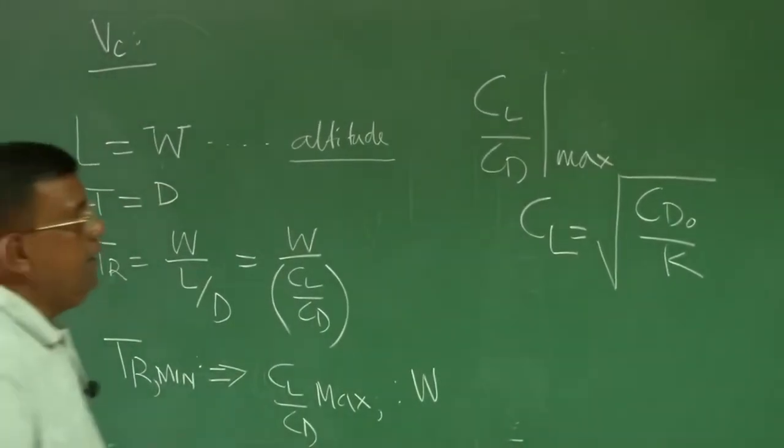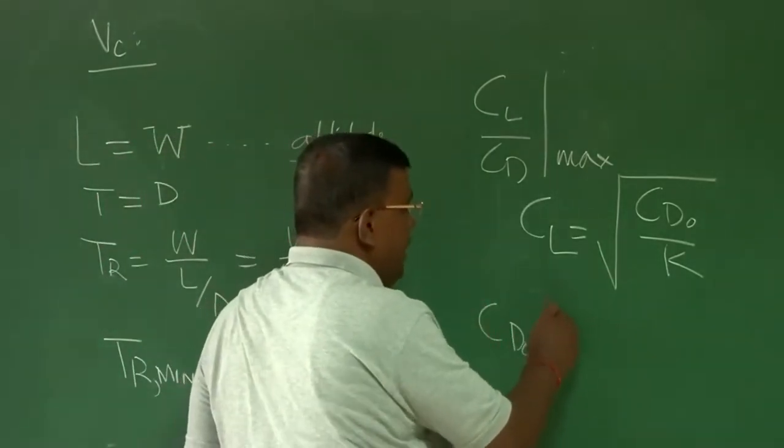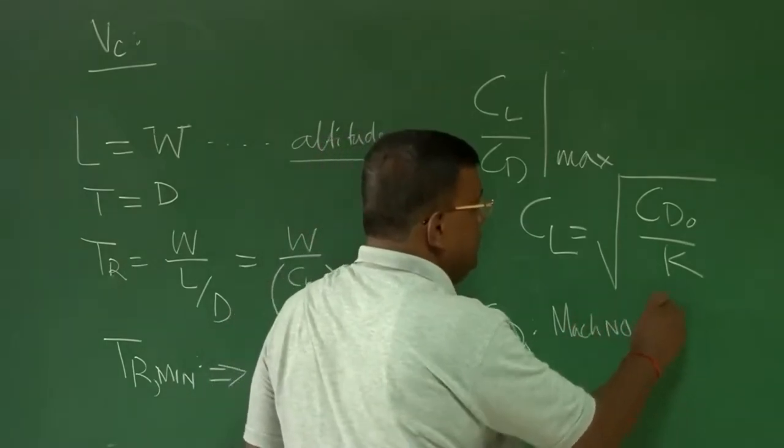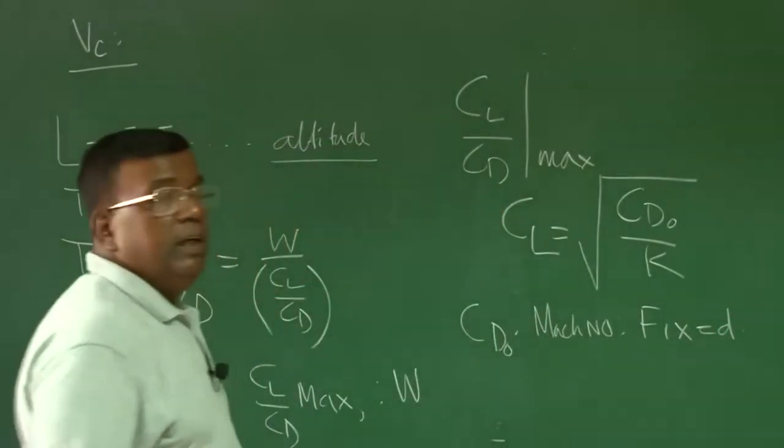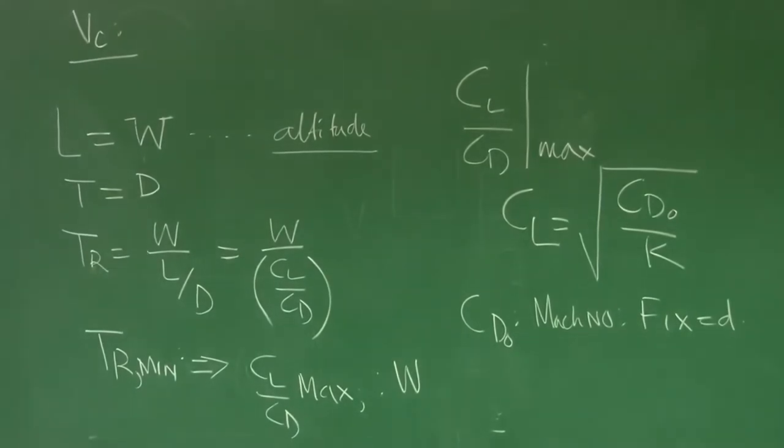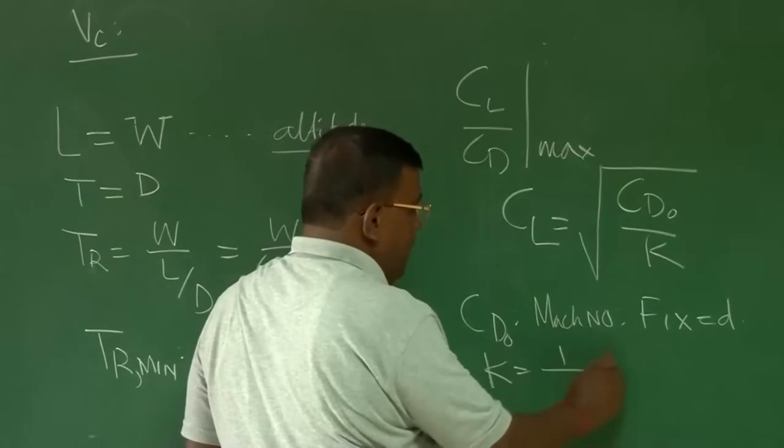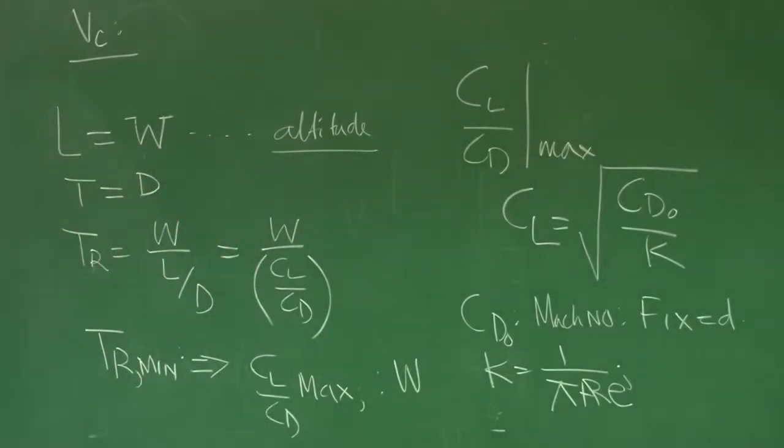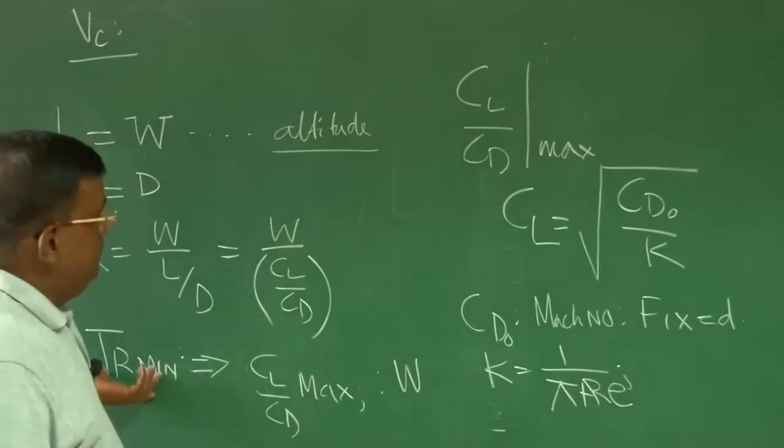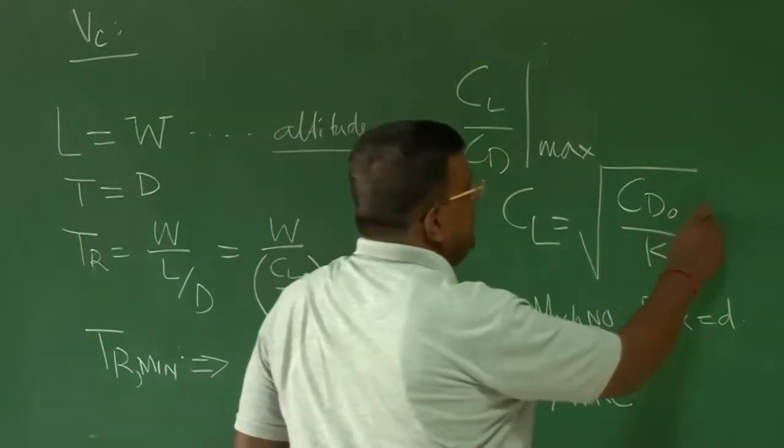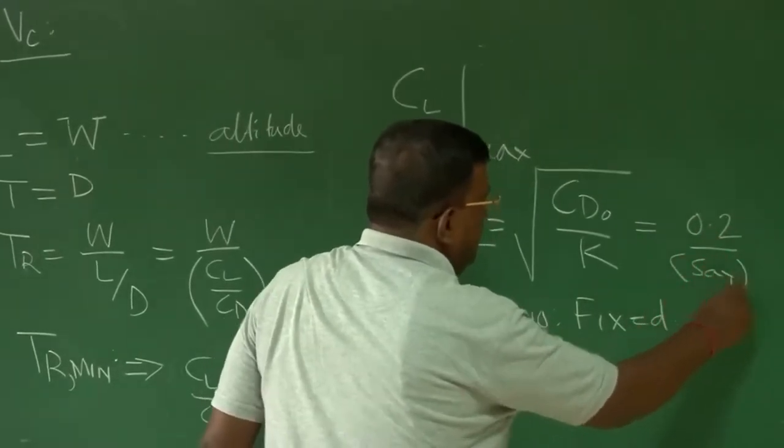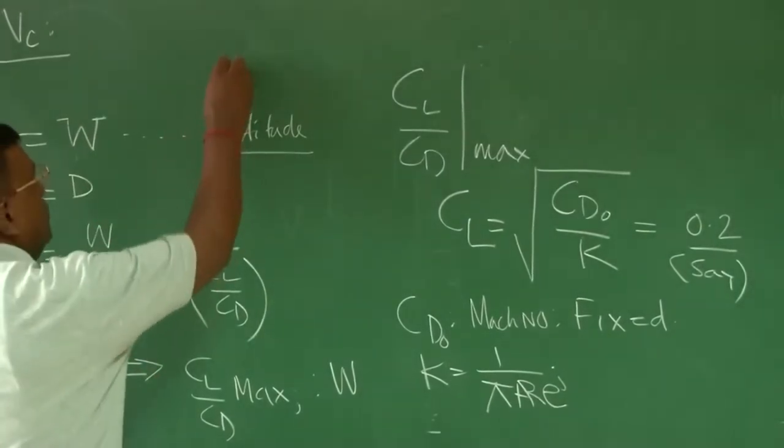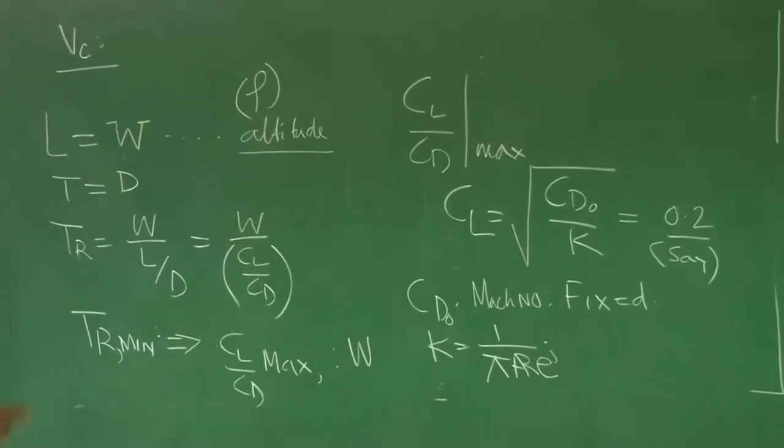And CD naught for an airplane at a given speed is fixed at a given Mach number is fixed, maybe typically 0.021, 0.023 of that order. And k, you know k is 1 by pi aspect ratio into e, this is also fixed once you have chosen the aspect ratio of the airplane. Now see if I want to fly at a given altitude, same time thrust required should be minimum that means, CL is fixed. Let us say that CL fixed value is 0.2. Let me repeat, I want to fly at a given altitude rho, such that thrust required is minimum. And for just an example, I am taking CL that value is 0.2.